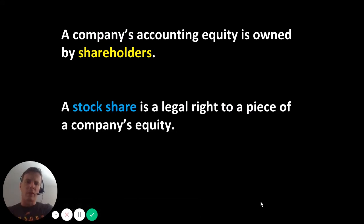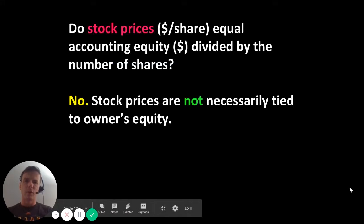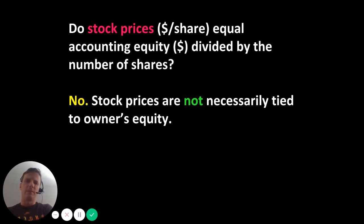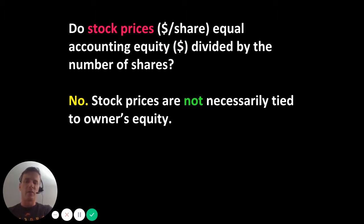A company's equity is owned by shareholders — the people that own the company. A stock share is simply a legal right to a piece of a company's equity. This raises a question: are stock prices simply equal to accounting equity — that is, assets minus liabilities divided by the number of shares? The answer is no. Stock prices are not necessarily tied to owner's equity.